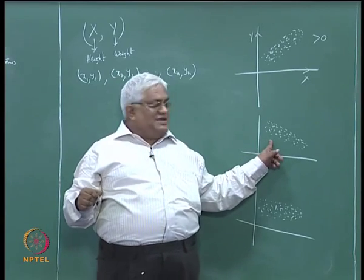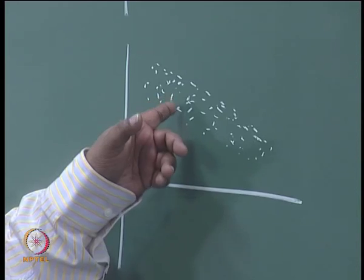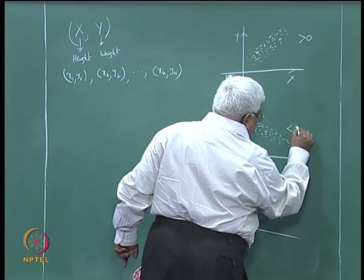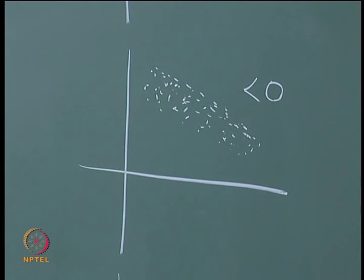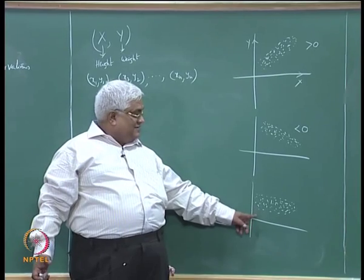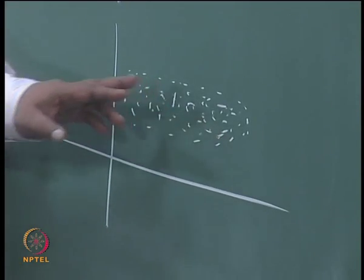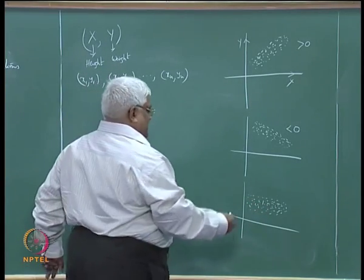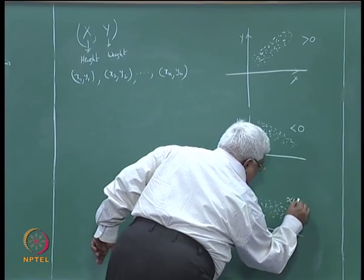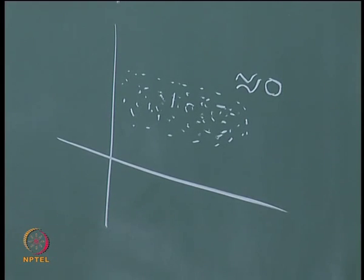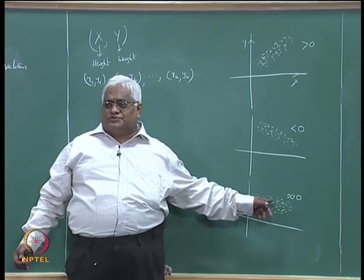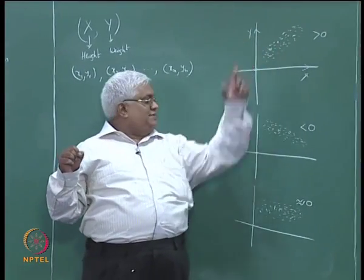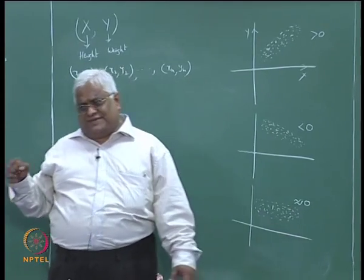In the third plot, whatever the value of x, y is more or less in the same range — so we would like to get the relationship as something very close to 0. We want to define a quantity that takes a positive value in the first case, a negative value in the second case, and something very close to 0 in the third case.